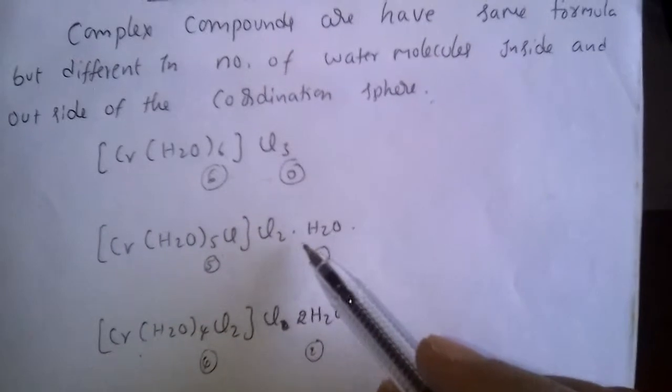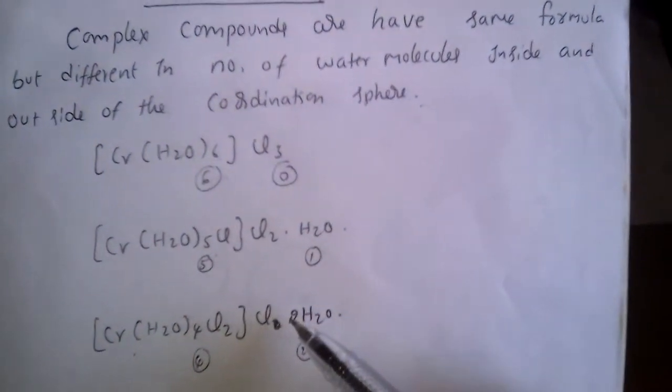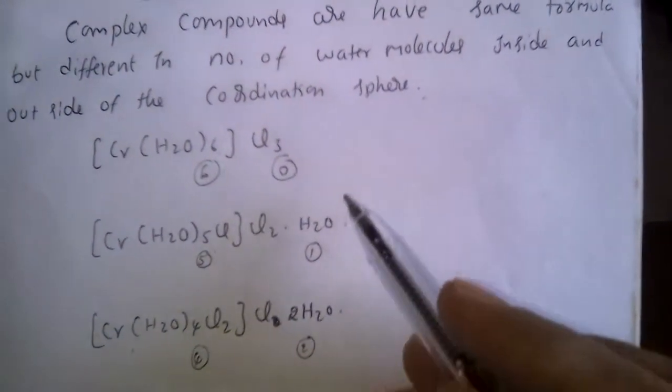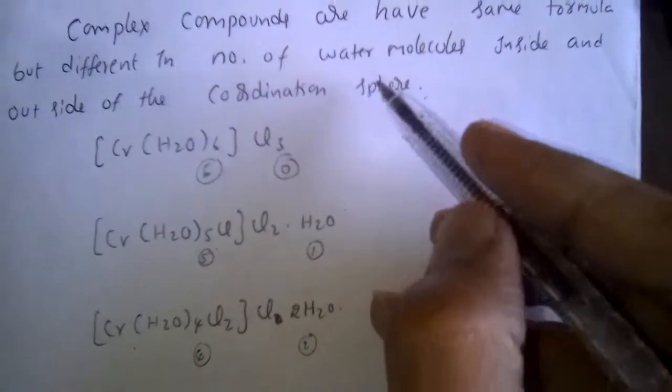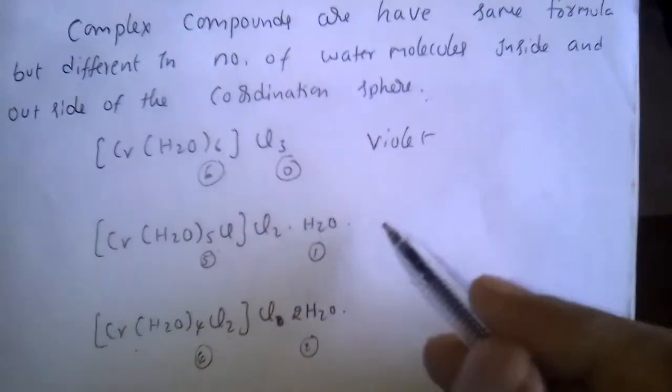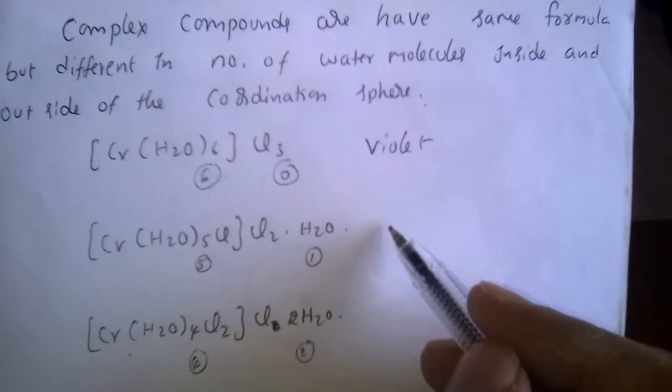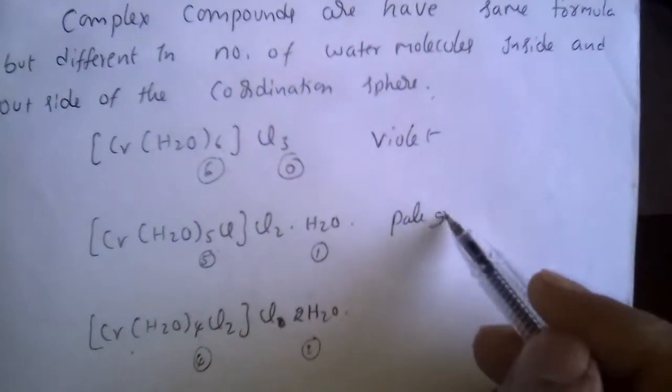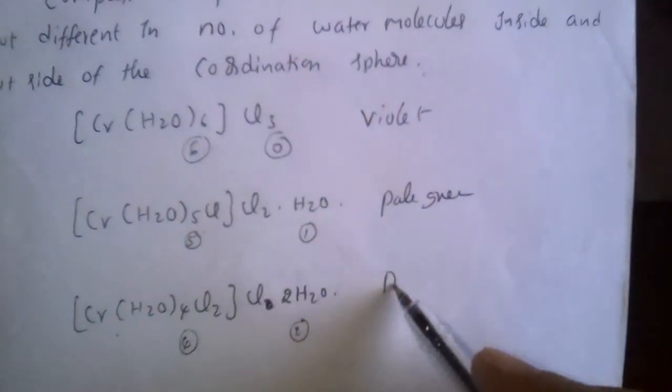So these types of complex compounds are called solvate isomers. Their properties are also different. The first one is violet in color, the second one is pale green, and this one is dark green.